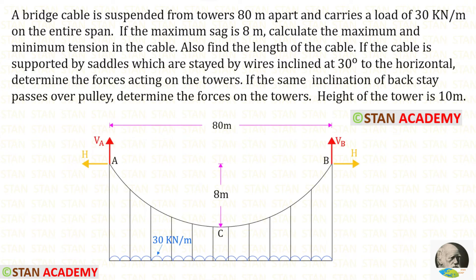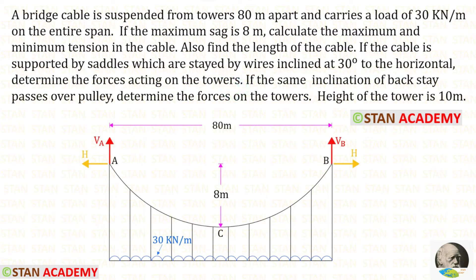Now let us do the remaining part of the problem. If the cable is supported by saddles which are stayed by wires inclined at 30 degrees to the horizontal, we need to determine the forces acting on the towers. There will be two towers, one at point A and one at point B. Since the cable is symmetrical, the forces in both towers will be the same, so we will consider only point A.